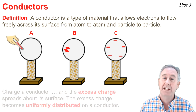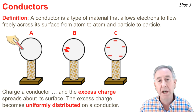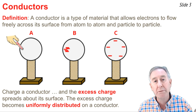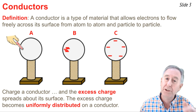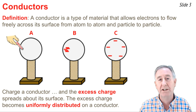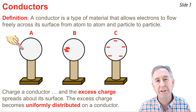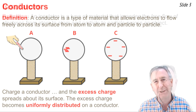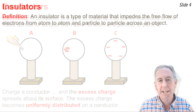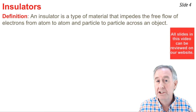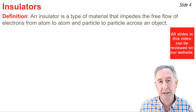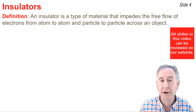This illustrates the idea that if you touch a conductor, the excess charge will distribute itself uniformly about the surface of that conductor, because conductors allow for the free movement of electrons from atom to atom and particle to particle. An insulator is a type of material that does not permit the free flow of electrons from atom to atom or particle to particle.